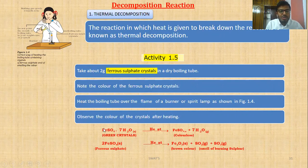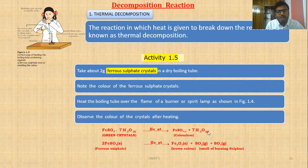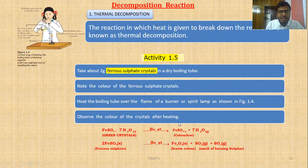So ferrous sulfate crystal — FeSO₄·7H₂O — when we heat it, the water quantity will be evaporated. So ferrous sulfate remains and the water evaporates in gaseous form. Ferrous sulfate is in the solid form. When ferrous sulfate is heated more, it will turn into ferric oxide — Fe₂O₃ — and also we are getting sulfur dioxide (SO₂) and sulfur trioxide (SO₃).